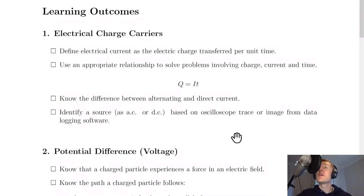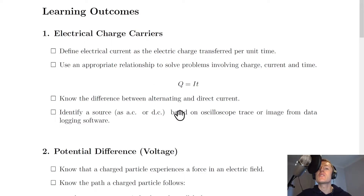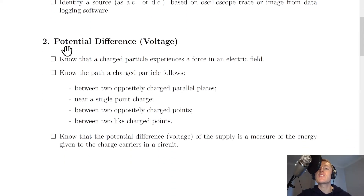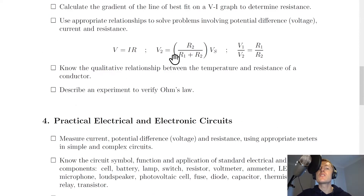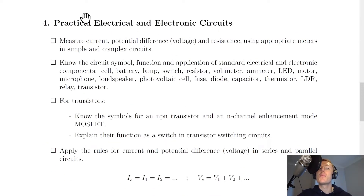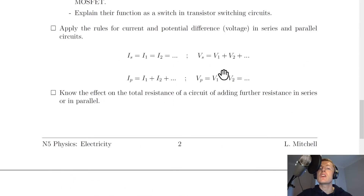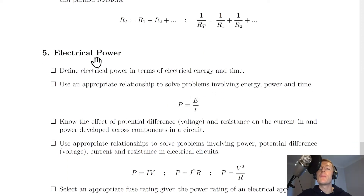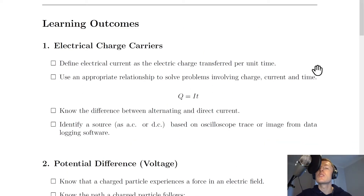So let's get started. The electricity topic for the National 5 Physics course is split into five sections. We have: electrical charge carriers as section one, potential difference (i.e. voltage) as section two, Ohm's law as section three, practical electrical and electronic circuits as section four, and lastly electrical power as section five. We're going to look at each section in turn.